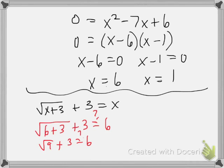Well, the square root of 9 is 3. I get 3 plus 3, and that definitely equals 6. So 6 is definitely a solution.